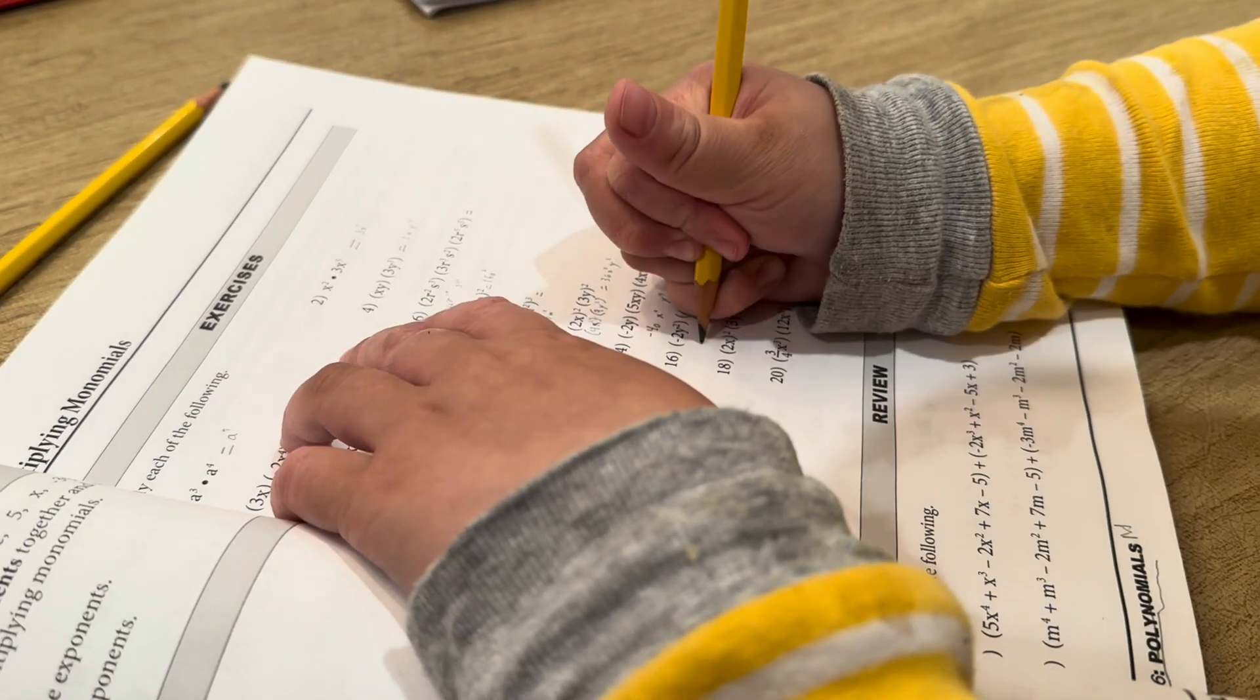3a squared cubed equals 27a to the sixth.